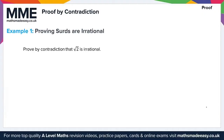Example 1 on proof by contradiction: proving surds are irrational. Here we prove by contradiction that the square root of 2 is irrational. To start, we take the negation — what we want to prove is that root 2 is irrational — so we begin by assuming root 2 is rational.